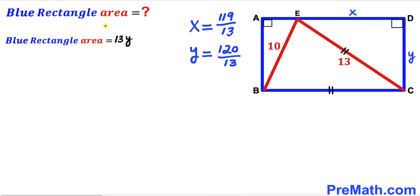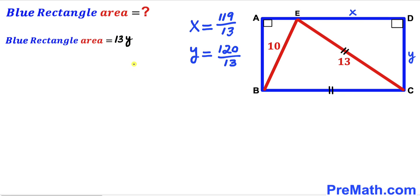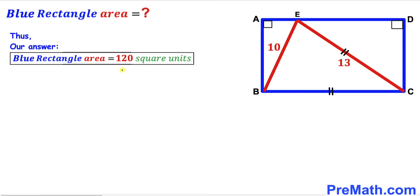Now we calculate the area of this blue rectangle ABCD, which equals 13 times Y. Our Y value is 120 divided by 13, so the area equals 13 times 120 divided by 13. The 13s cancel, so the blue rectangle area turns out to be 120 square units. Thus the area of rectangle ABCD is 120 square units. Thanks for watching and please don't forget to subscribe to my channel for more exciting videos.